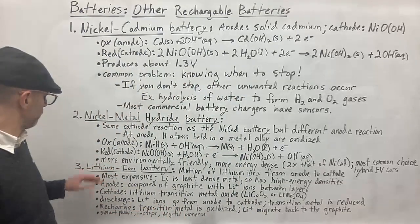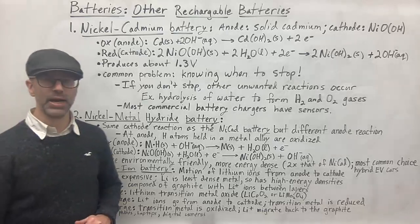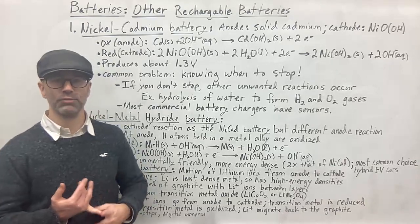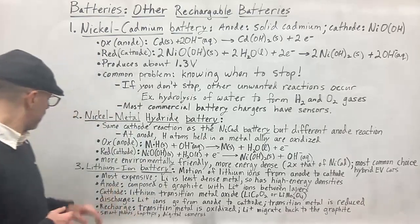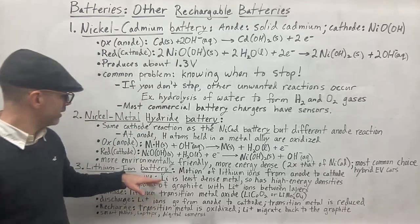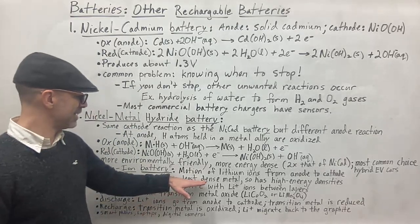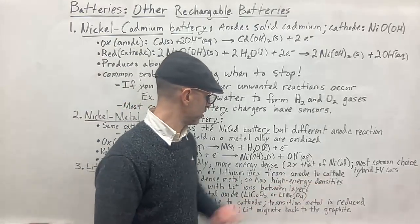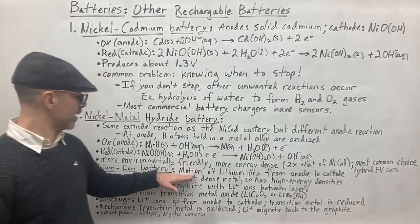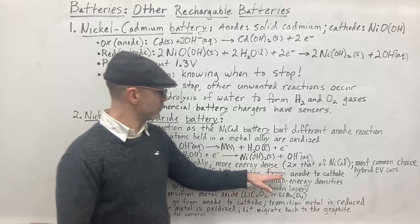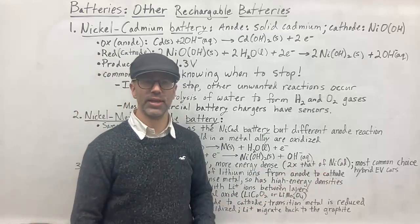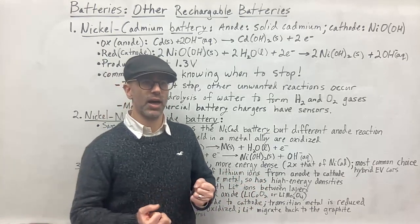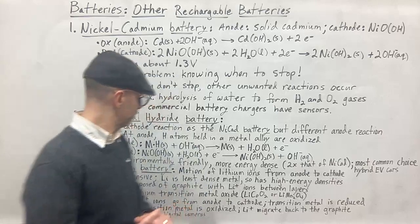And finally, the third kind that you are probably familiar with is your lithium ion battery. These are the batteries that you typically will find in your laptop computer, your smartphone, or your digital camera. So these are the most expensive kind. Lithium is the least dense metal. And so because it's the least dense metal, it will have a high energy density.